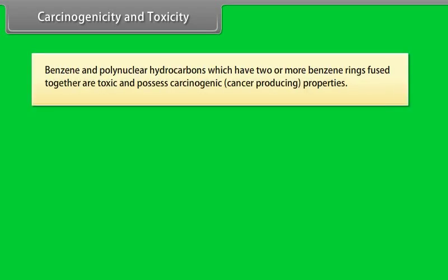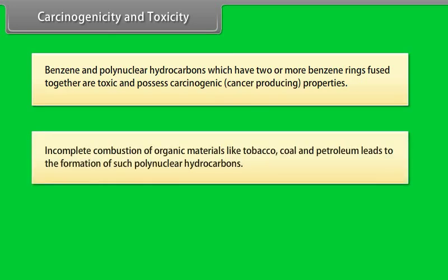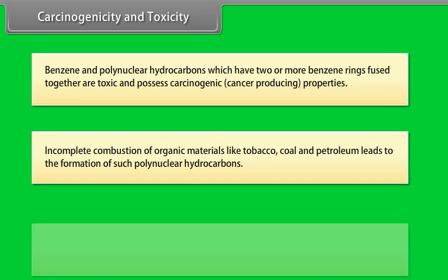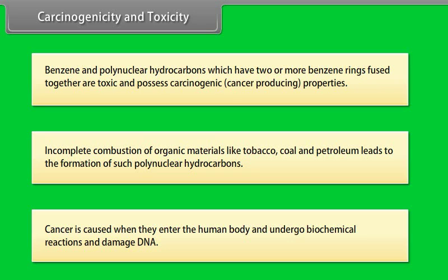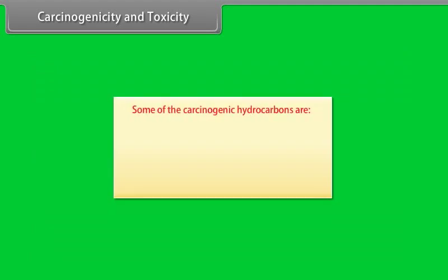Carcinogenicity and toxicity. Benzene and polynuclear hydrocarbons — which have two or more benzene rings fused together — are toxic and possess carcinogenic (cancer-producing) properties. Incomplete combustion of organic materials like tobacco, coal, and petroleum leads to the formation of such polynuclear hydrocarbons. Cancer is caused when they enter the human body, undergo biochemical reactions, and damage the DNA.